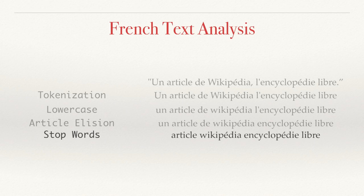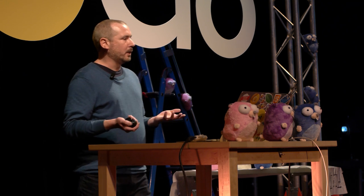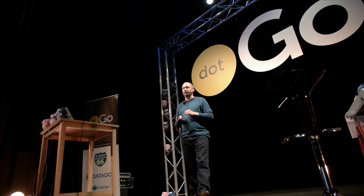Then we do stop word removal. Stop words are words that occur so frequently in language that they're not helpful in terms of finding relevant results. So the words "un" and "de" are going to be removed from this sentence. And then finally, we're going to perform a step called stemming, where we take generally prefixes and suffixes and trim them off to leave us with some root words. In the case of French, we're also going to remove accent marks over characters as well.